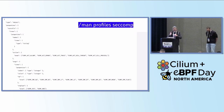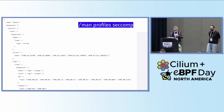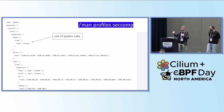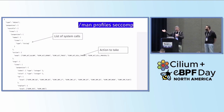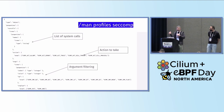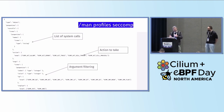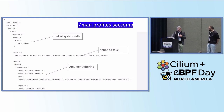A seccomp profile has three key things. You list system calls. For each system call, you define what action you expect the Linux kernel to take — whether to allow it, return an error code, kill the process, or trace it in system logs. A little bit later, there is also the option to add argument filtering, and the ability to use capabilities to whitelist or blacklist things.